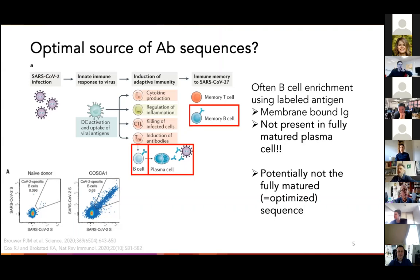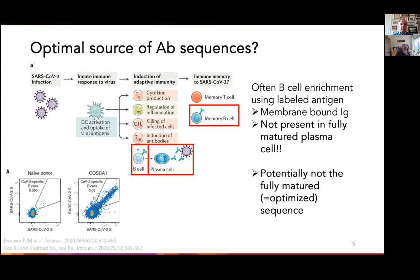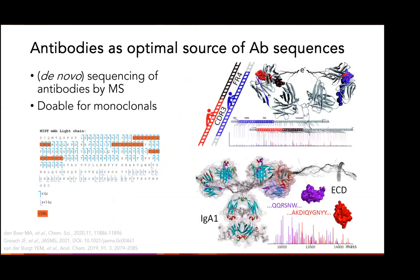Nevertheless, it makes perfect sense to start here since the methodologies are available and monoclonals derived from these sequences are functional and active. The question is whether they could be maybe even more active, and that question is what we aim to answer with our pipeline. We're not completely there yet, but we have made some progress. So instead of using the B cell sequences, we want to use the antibodies — the actually produced, fully optimized product — as the source for antibody sequences, with mass spectrometers as our sequencing equipment.